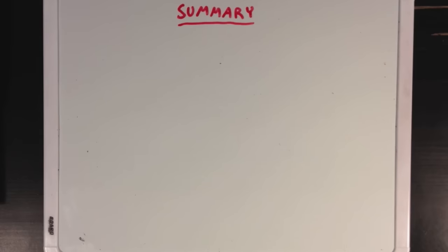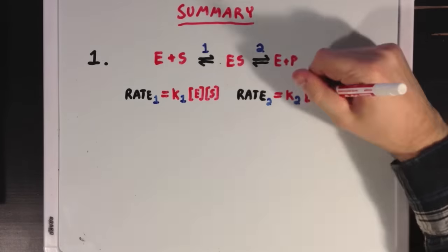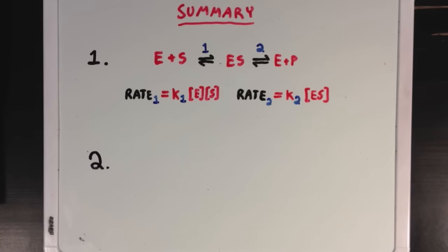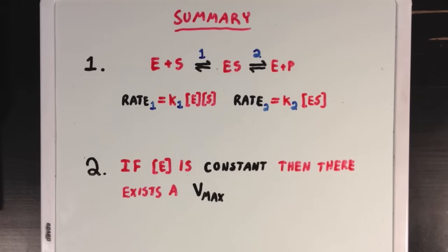So what did we learn? Well first we learned that we can classify enzyme catalysis into two important steps. The first is that the enzyme binds the substrate, and then second, the formation of product. And we talked about how each of these steps has a distinct rate. Second, we learned that if we keep the enzyme concentration constant, then there will be a maximum speed Vmax for that reaction.